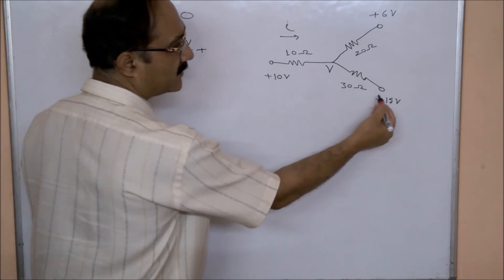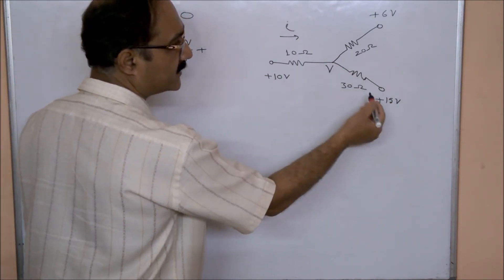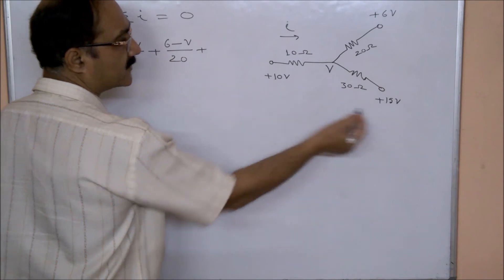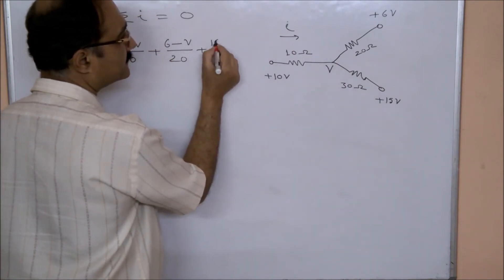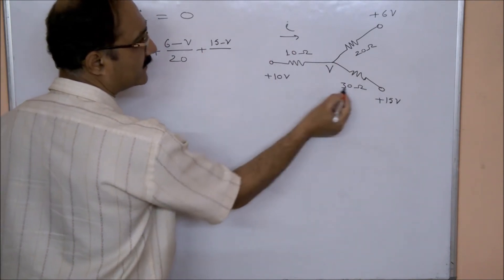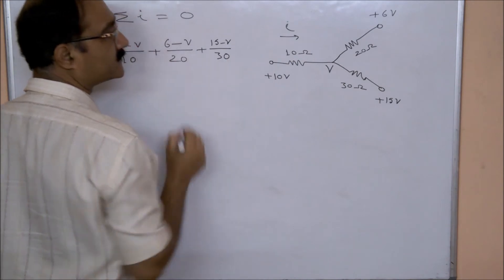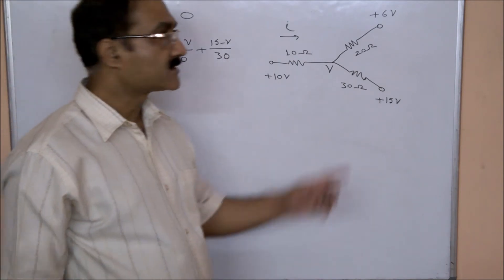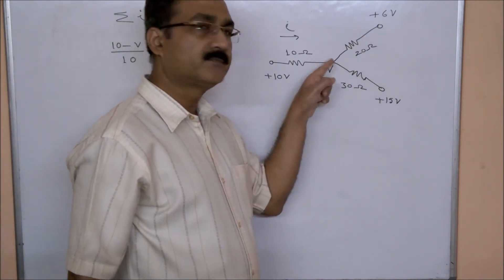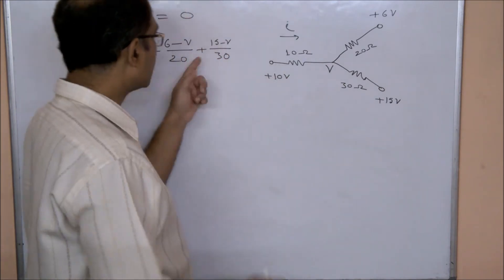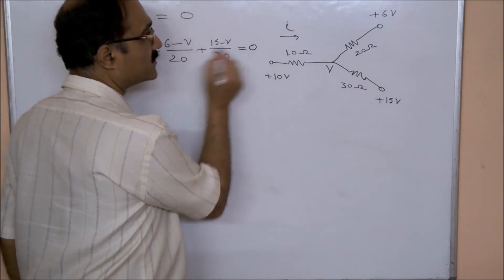Plus current coming from this side, so (15 - V) divided by 30. So these are the three currents coming to this junction, so their summation is zero.